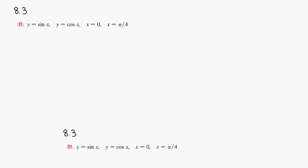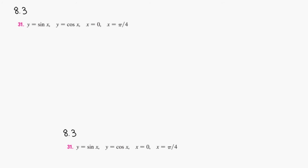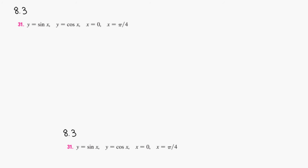Let's look at section 8.3, problem number 31. We want to find the centroid of a region bounded by these two curves, from x equals 0 to x equals pi over 4. So let's draw a picture here.